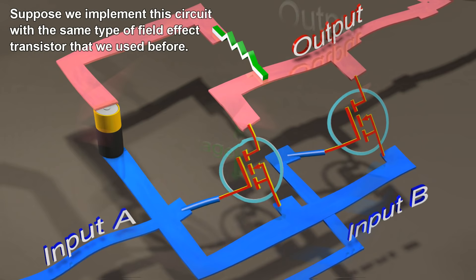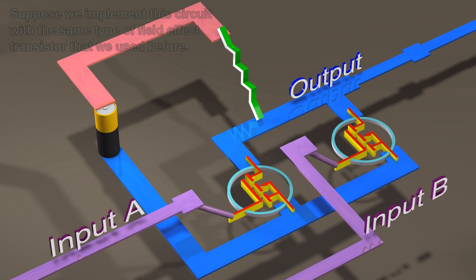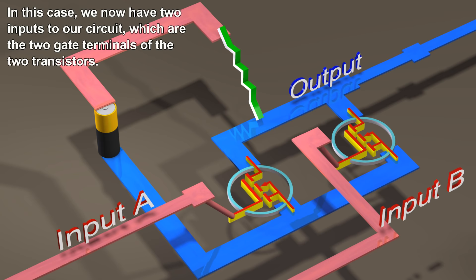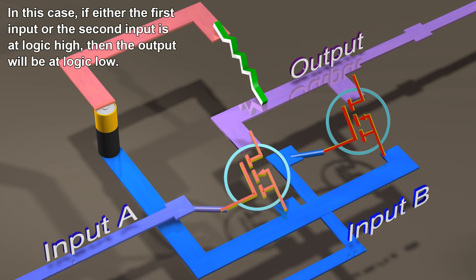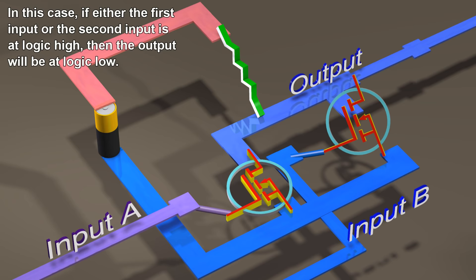Suppose we implement this circuit with the same type of field-effect transistor that we used before. In this case, we now have two inputs to our circuit, which are the two gate terminals of the two transistors. If either the first input or the second input is at logic high, then the output will be at logic low.